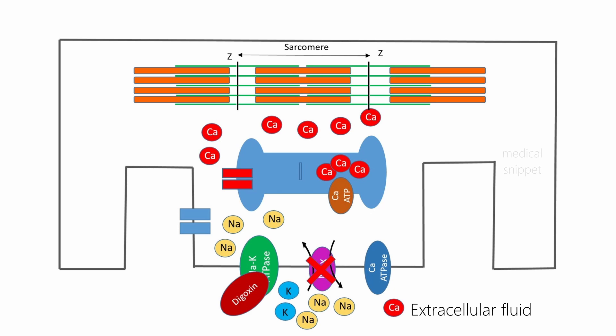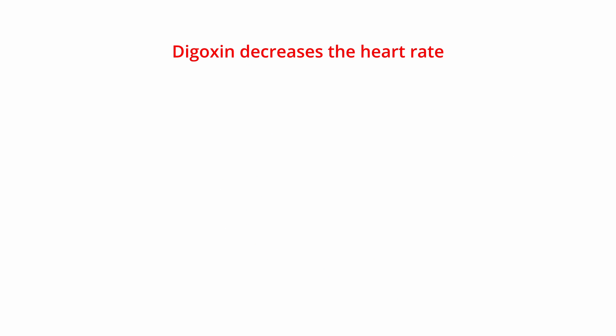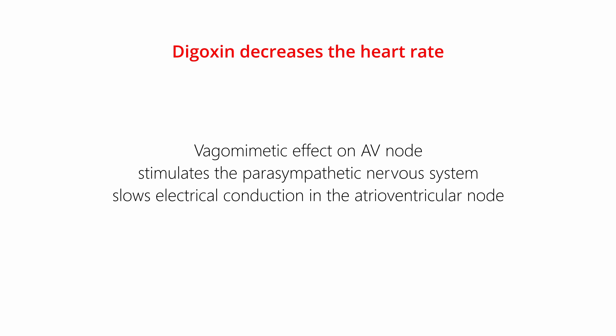Now let's see how digoxin decreases the heart rate. Digoxin has vagomimetic effects on the AV node. It stimulates the parasympathetic nervous system and slows electrical conduction in the atrioventricular node, thus decreasing the heart rate.